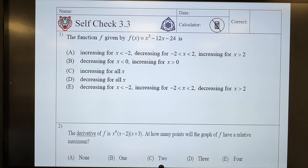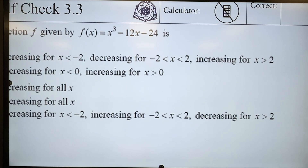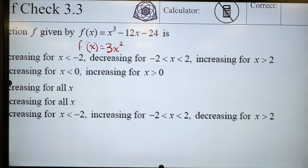F prime. So I'm going to need to find f prime. F prime of x, in this case, is going to be — what, Diego? Slope — and then tell us what it is. 3x squared minus 12.